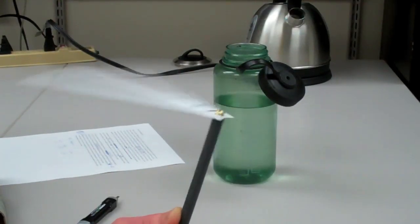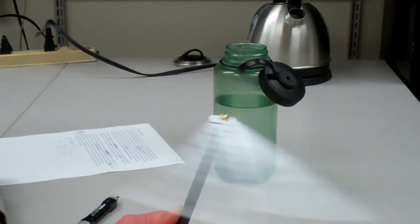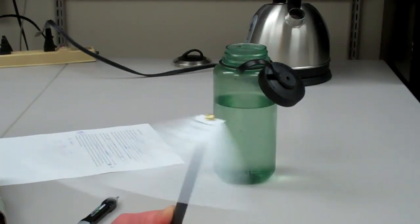Using the wet bulb depression and the dry bulb temperature, you can now look up the relative humidity and dew point temperature in psychrometric tables.